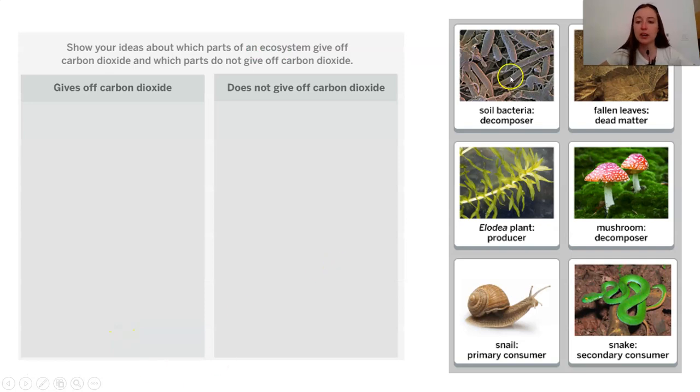If we take a look at our categories, I can see that a snail is a primary consumer. Remember, that means that it is a consumer that is consuming or eating plants to get the energy storage molecules. The elodia plant is a producer, meaning that it does produce its own energy storage molecules.